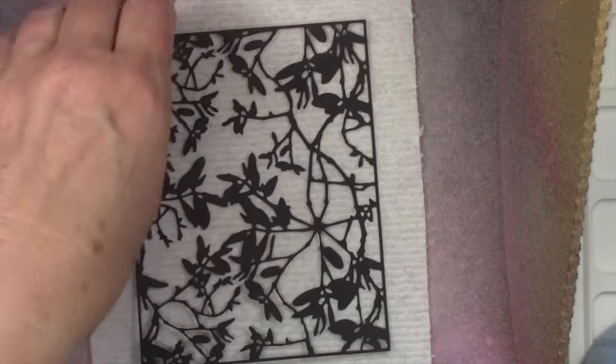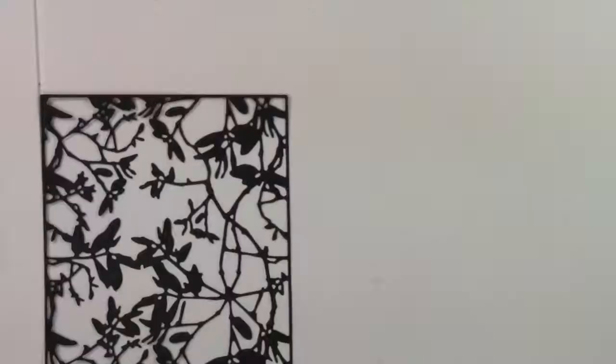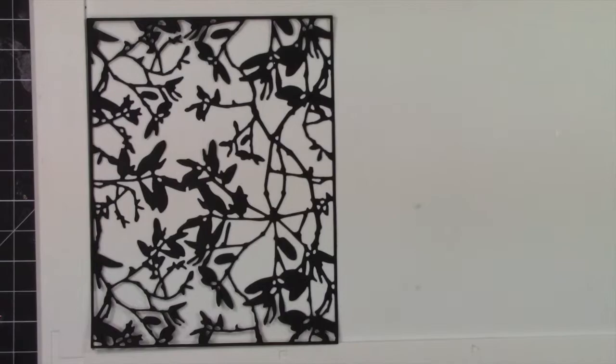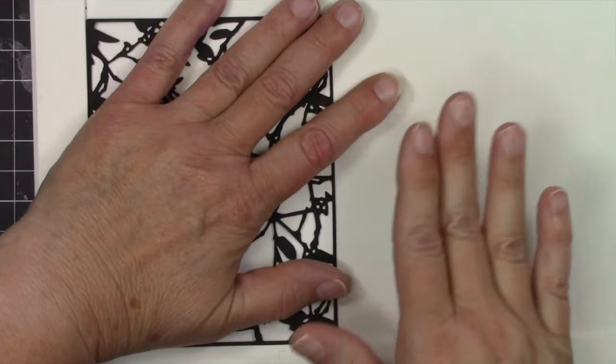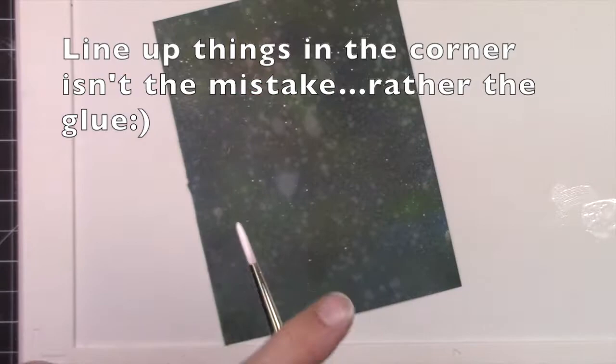So this spray that I just showed you, this Loctite, I didn't realize it was repositionable and that was it. Some of them are repositionable and it's permanent later. Well, that's just repositionable. One tip though is to put it in the corner of your mat or your MISTI when you're layering things, but you're going to find out why that was a mistake later.